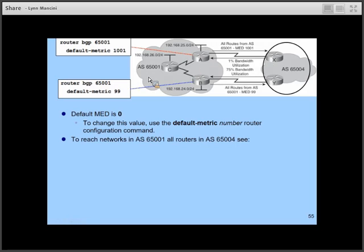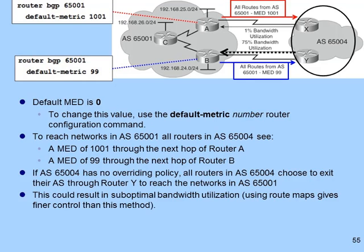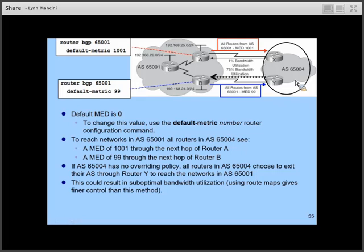If we set MEDs such that the MED is 1001 to go from AS 65001 into AS 65004 via X, and a lower MED via Y, without any earlier tiebreakers in effect, all traffic from one autonomous system to the other would go through the B-to-Y link because it has the lower MED. A solution is to set MEDs for only some routes and not others to achieve better link utilization.